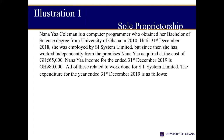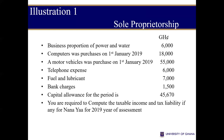Now let's look at this example. Naya Coleman is a computer programmer who obtained a bachelor's from the University of Ghana. Before 2018, she was employed, but afterwards she worked independently in her own premises, which she acquired at $65,000. During the year ended December 2019, her income generated was $80,000. Expenditures included a business proportion of power, computer purchase, motor vehicle, telephone expenses, and bank charges — all related to the income she generated. We have to compute the taxable income and then the tax liability for Naya.